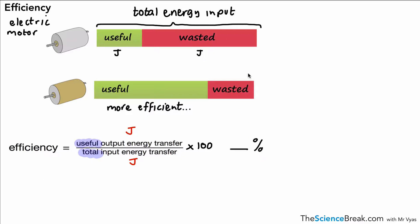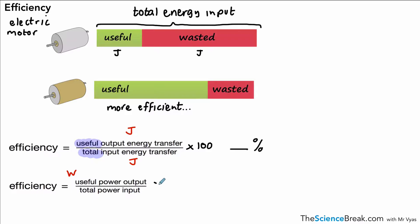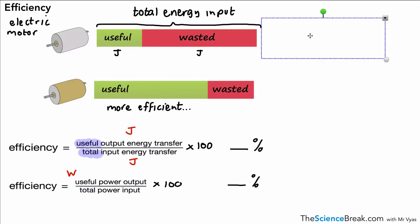The second equation is very similar, but instead of energy transfers we're talking about power outputs and inputs. Power, as we know, is measured in watts — that means joules per second. Again, we can multiply by 100 if we want the answer as a percentage.